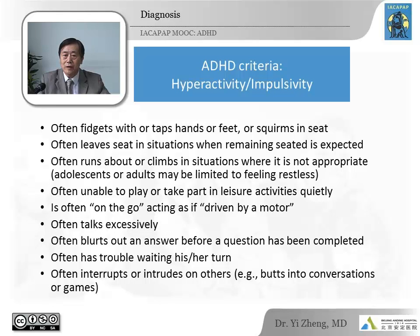The symptoms of hyperactivity and impulsivity include: the child often fidgets with or taps hands or feet, or squirms in seat; often leaves seat in situations when remaining seated is expected; often runs about or climbs in situations where it is not appropriate; adolescents or adults may be limited to feeling restless; often unable to play or take part in leisure activities quietly; is often on the go, acting as if driven by a motor; often talks excessively; often blurts out an answer before a question has been completed; often has trouble waiting their turn; often interrupts or intrudes on others, for example, butts into conversations or games.